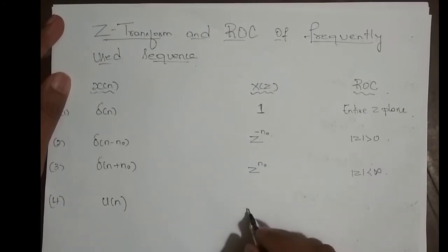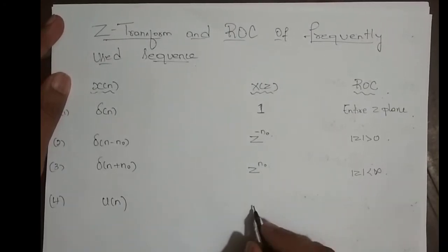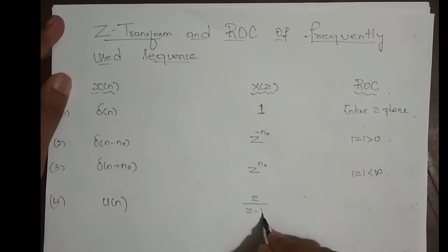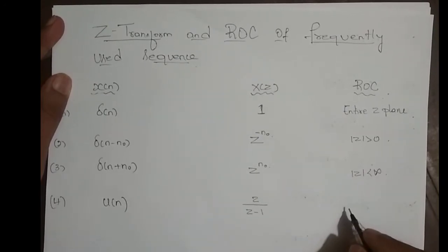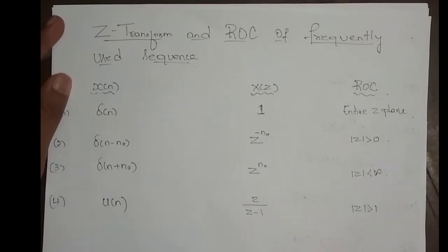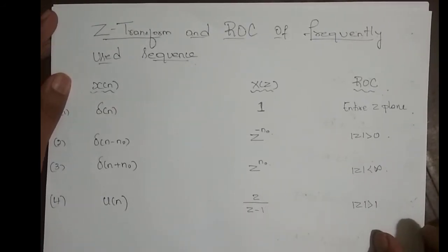What is the Z-transform of the unit step function u(n)? It is z divided by (z - 1), and its ROC is magnitude of z greater than 1 — that is, outside the circle with radius one.